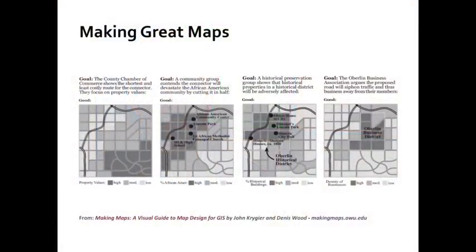Here are four examples of how you can tell a different story with the same basic data using maps. These are all from a book called Making Maps by John Krieger and Dennis Wood, a really nice little cartography textbook. Each of these maps shows the same fundamental thing: the proposed impact of building a new connector road between two major roads in a small town.